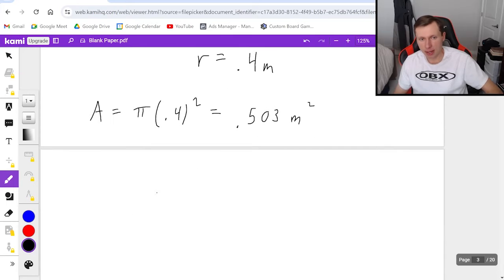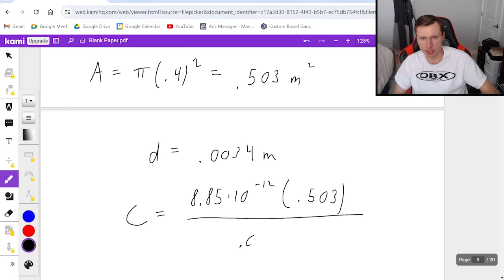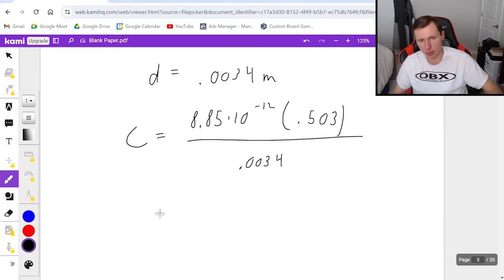So I'm dividing that by 1000, because if I have 3.4 millimeters, I got to divide by 1000. So 0.0034, now that's in meters, the units I want. And then finally, C equals epsilon naught, which is 8.85 times 10 to the minus 12, times the area, 0.503, and then divide it by the distance, 0.0034. Plug this in a calculator, and we'll get 1.31 times 10 to the minus ninth.